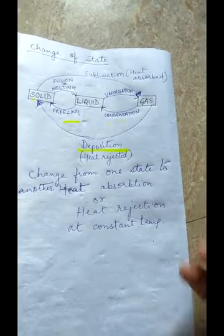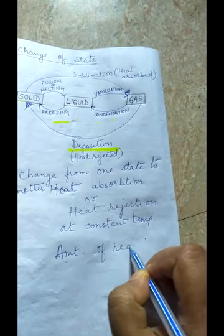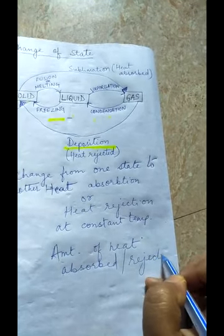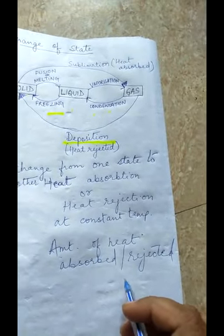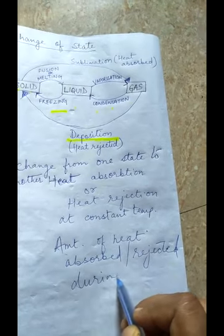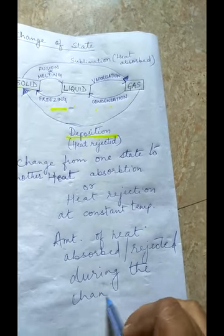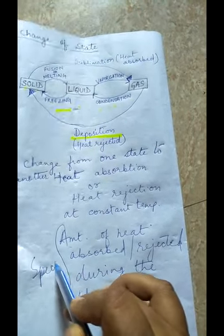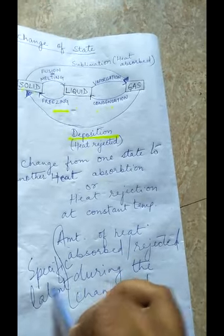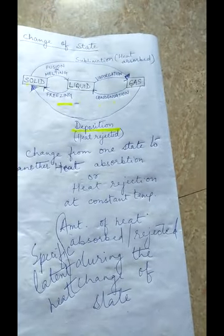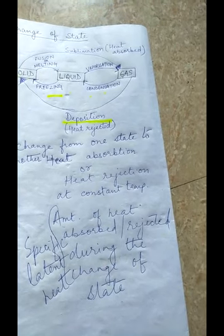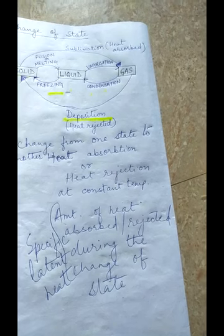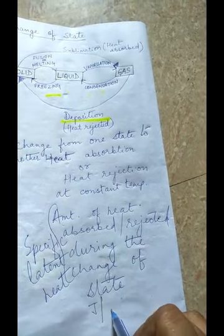The amount of heat absorbed or rejected by a substance during the change of state is known as specific latent heat. It is measured in joules per kilogram.